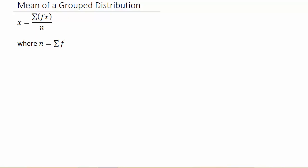In this video we're going to look at finding the mean of a frequency distribution or grouped distribution. The sample mean of a frequency distribution is x-bar, which equals the sum of f times x — that's the frequency times the x values — over n, where n is the sum of the frequencies.